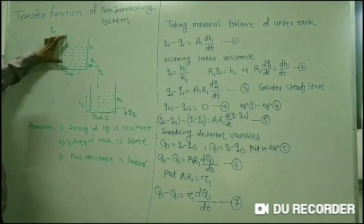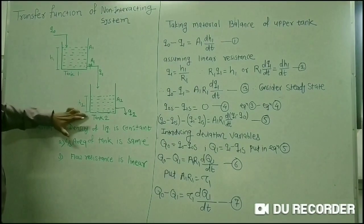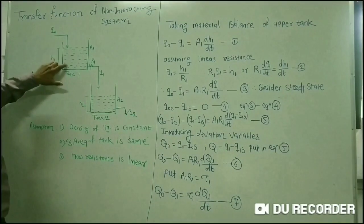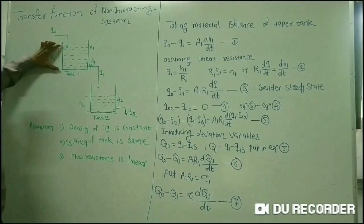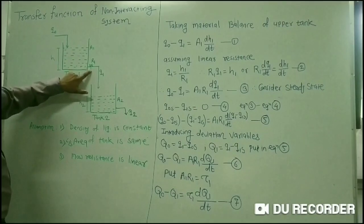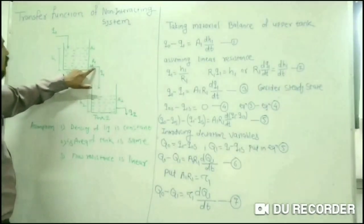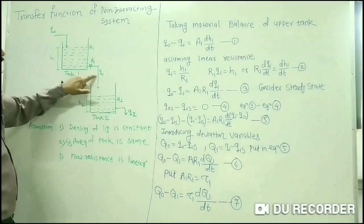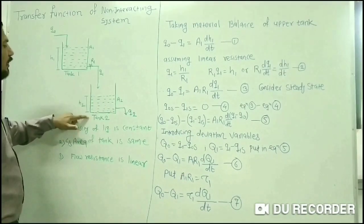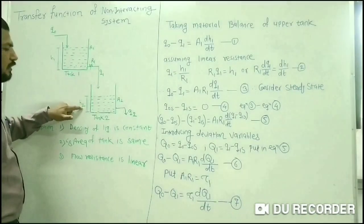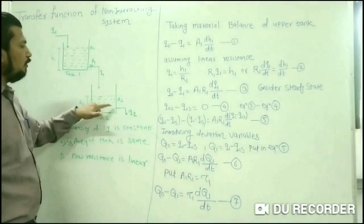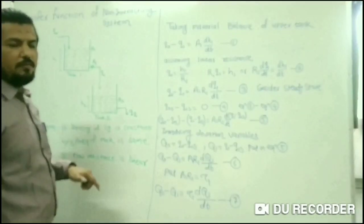Q0 is the inlet flow rate to tank number 1, the upper tank, in which head H1 is generated. A1 is the area of tank number 1 and R1 is the resistance of tank number 1 to flow. The outlet of tank number 1 is Q1, which enters tank number 2 through the atmosphere. Due to this, the head generated in tank number 2 is H2, with area A2. Q2 is the outlet flow rate of tank number 2.